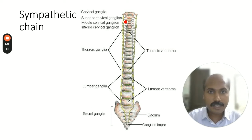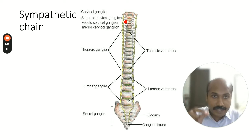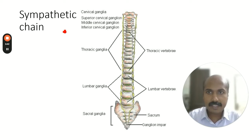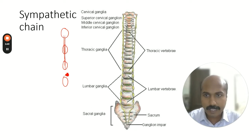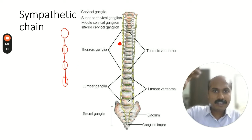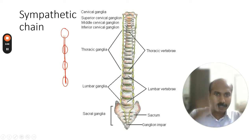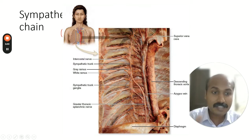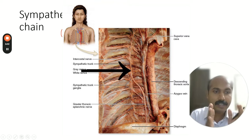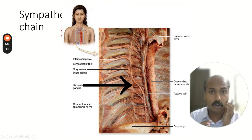On both sides of the vertebra you can see an arrangement of ganglia. This is one ganglion, this is another ganglion, and all of them are arranged with a nervous connection between them. So it looks like two wires with a lot of swellings or knots — that is the appearance you see.